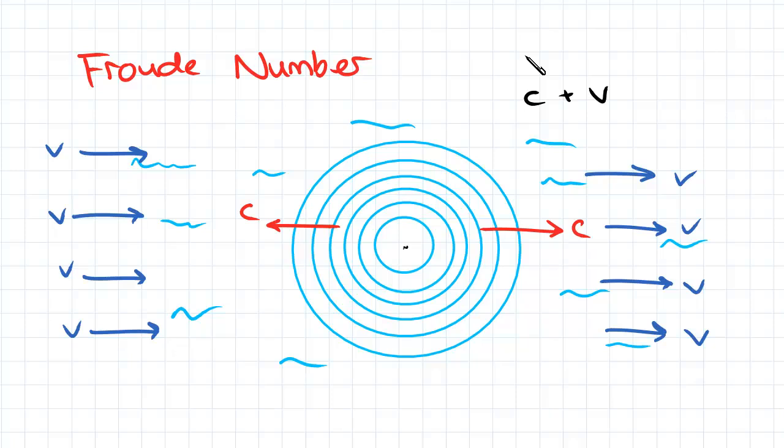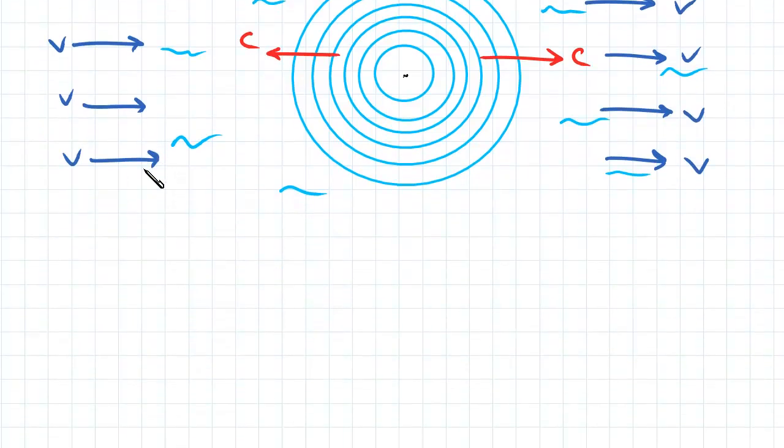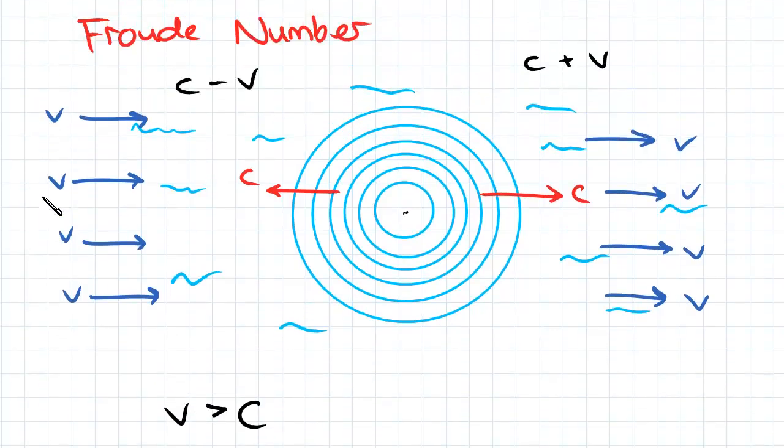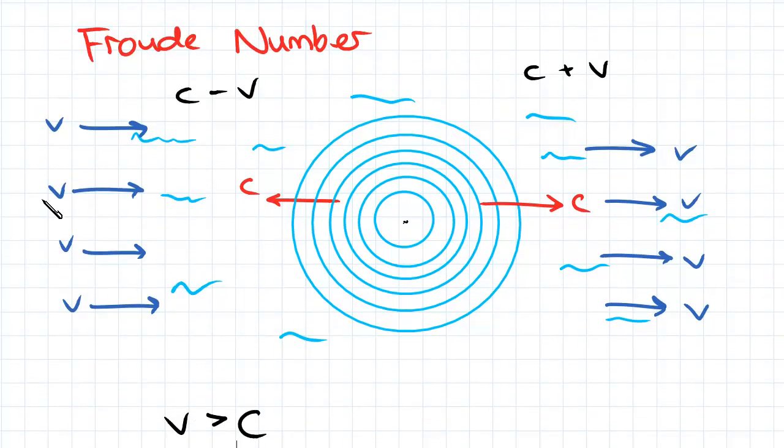If we look at the side of the rippling that has c in the opposite direction of v, we run into some problems. Here the relative speed is going to be c minus v. So when v is greater than c, the wave speed is going to be negative, which means the motion of this part of the ripple is still going to be downstream.